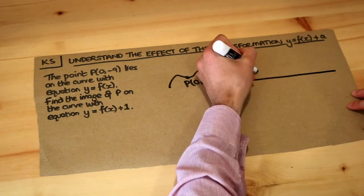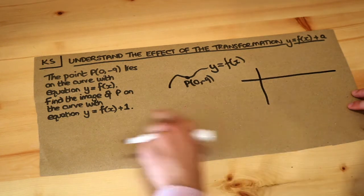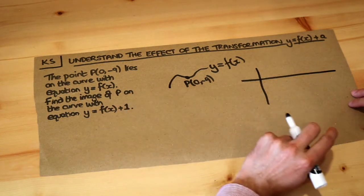Now in the previous video I had some nice summary table of how to work out the effect of a particular transformation like this.